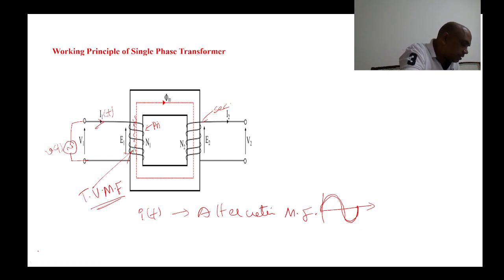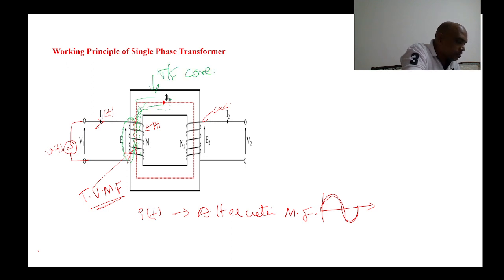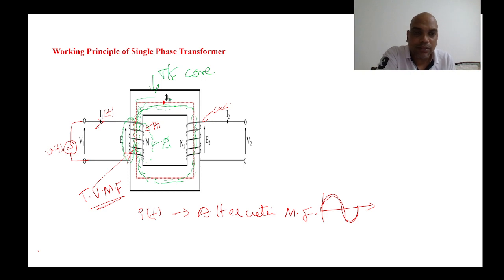The time-varying magnetic field cuts the conductor. That magnetic field passes through the coil — some amount of flux passes through the air, and most of the flux passes through the transformer core. The flux passing through air is called leakage flux, and the main flux passes through the transformer core.